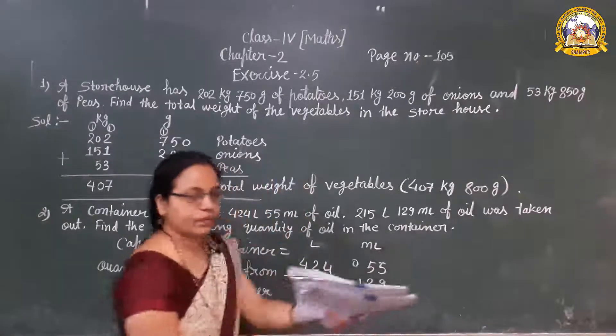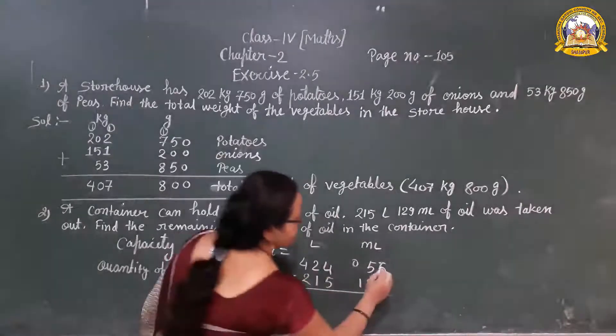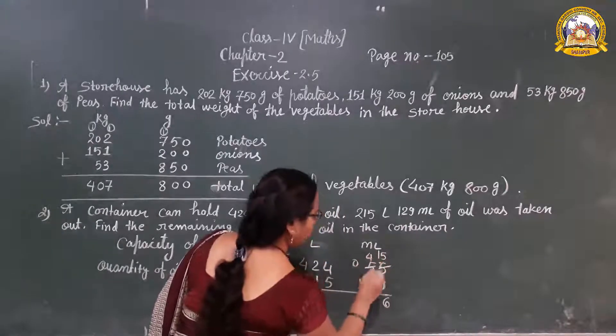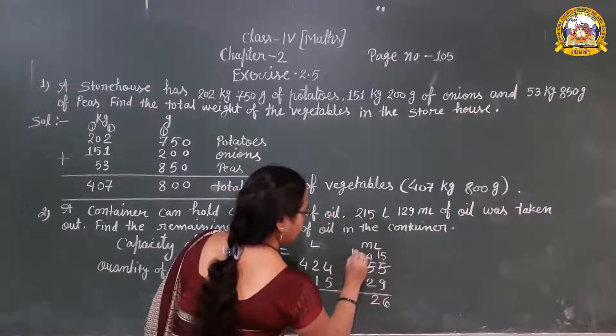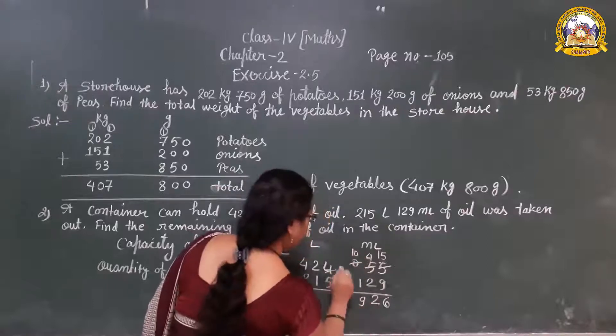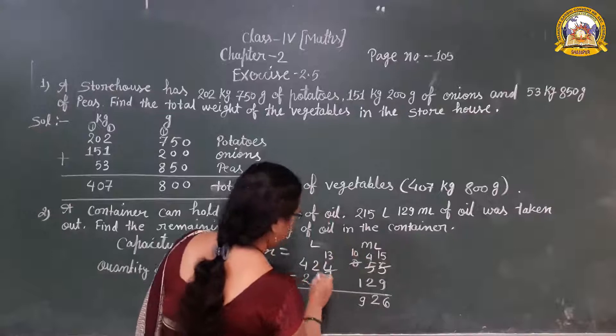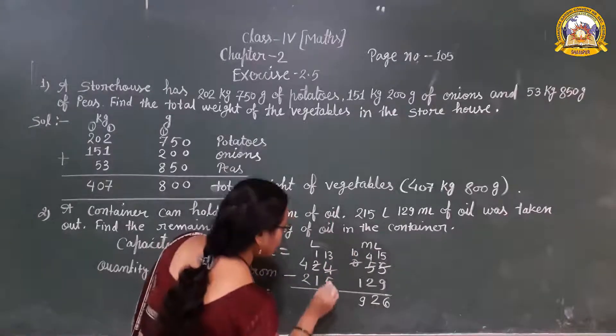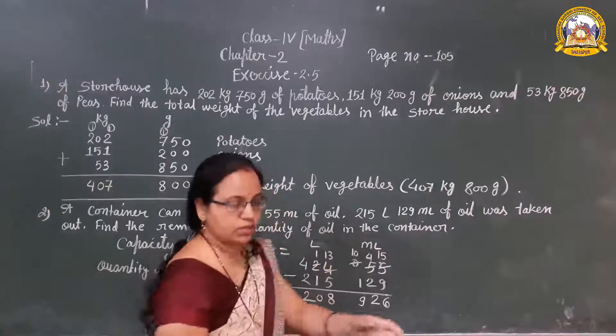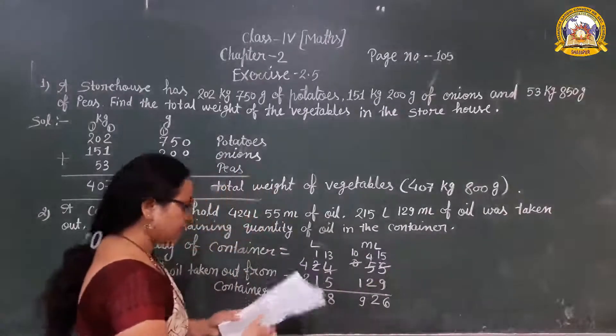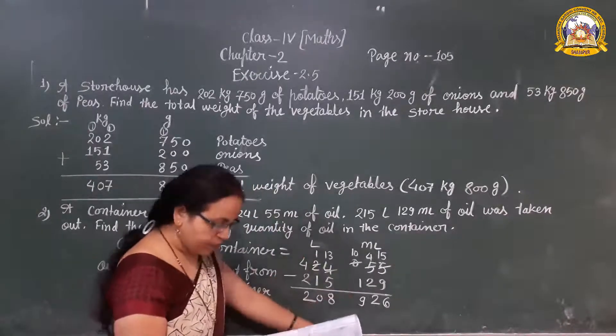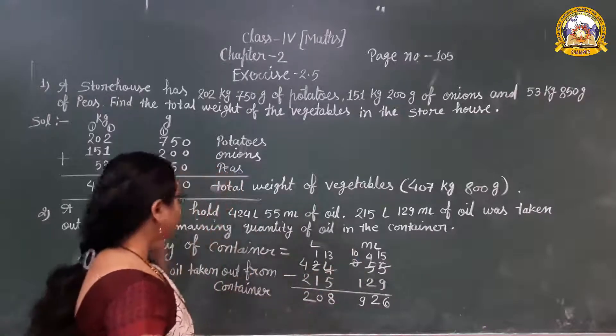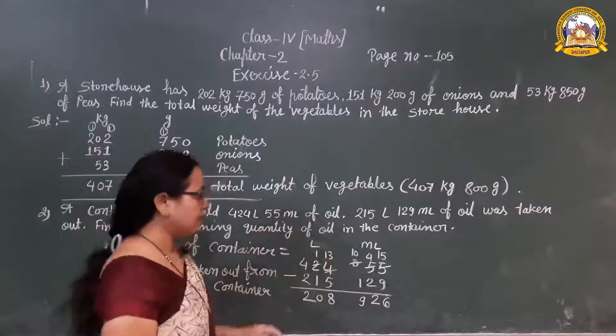15 minus 9 is 6. 4 minus 2 is 2. 10 minus 1 is 9. 30 minus 5 is 8. 1 minus 1 is 0, and 4 minus 2 is 2. So what is the answer? 208 liter 926 milliliter oil is remaining in the container.